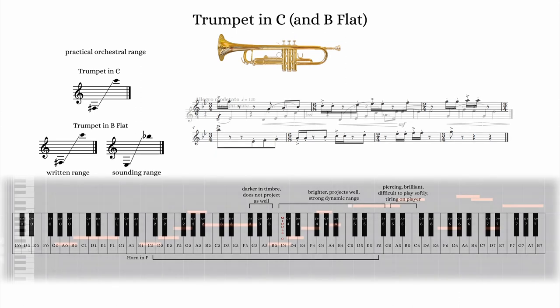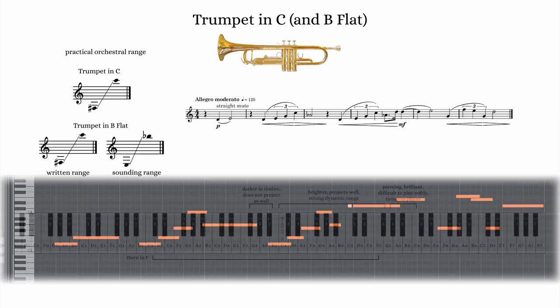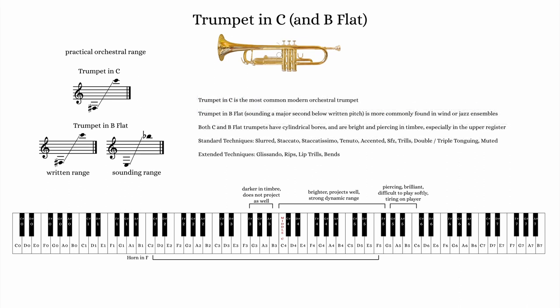Muting the trumpet is a standard technique, and the most common mute is the straight mute. Just remember to give the player enough time to add or remove the mute from the bell of the trumpet — usually a few measures is sufficient. There are many types of trumpet mutes, and while most of them are standard jazz and Latin accessories, only a few are readily used in the orchestra. Other than the straight mute, the harmon and cup mutes are usually safe to ask for, and chances are most professional orchestral trumpet players will have bucket, plunger, and solotone mutes available as well.